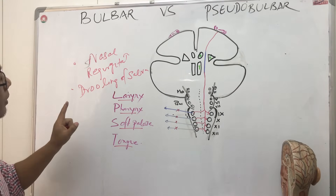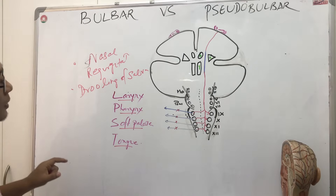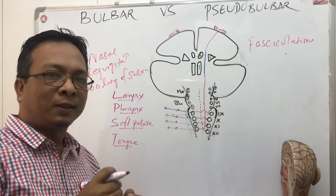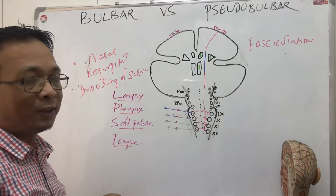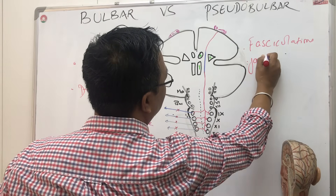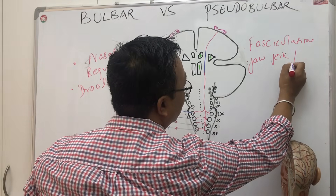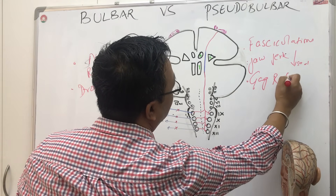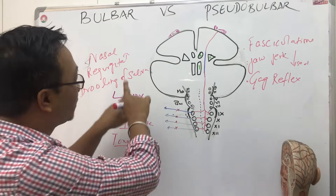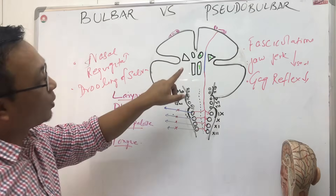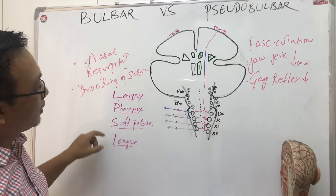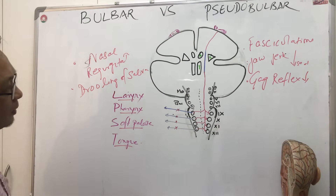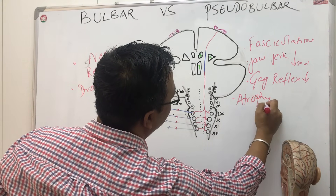What will we find as signs in bulbar palsy? There will be fasciculations — small twitches seen in the muscle. The jaw jerk will be absent or reduced because this is a lower motor neuron paralysis. There will be absent or reduced gag reflex, since nine, ten, eleven, twelve control these functions. Fasciculations will be present and gag reflex will be decreased.